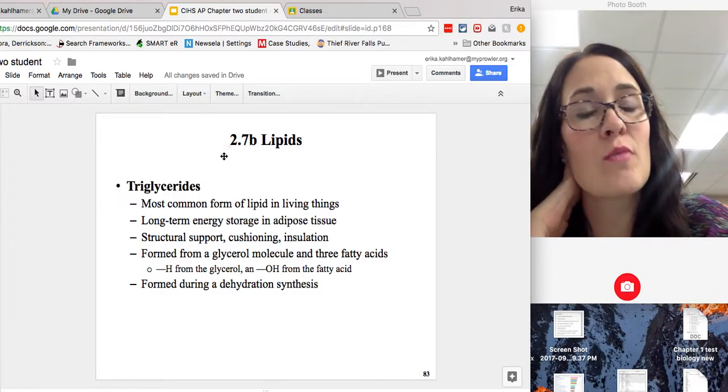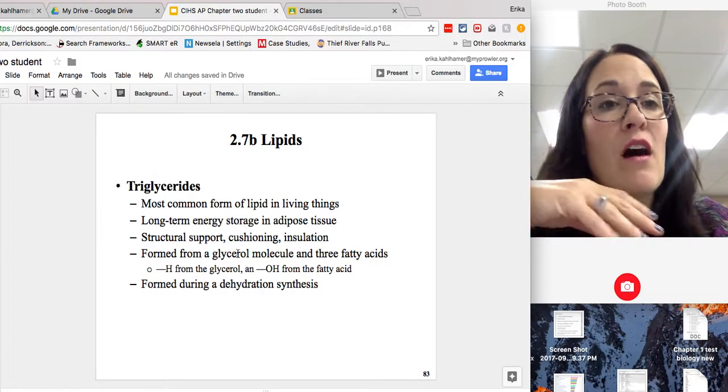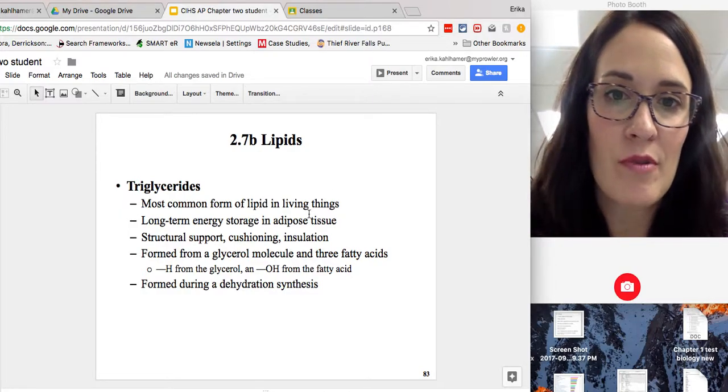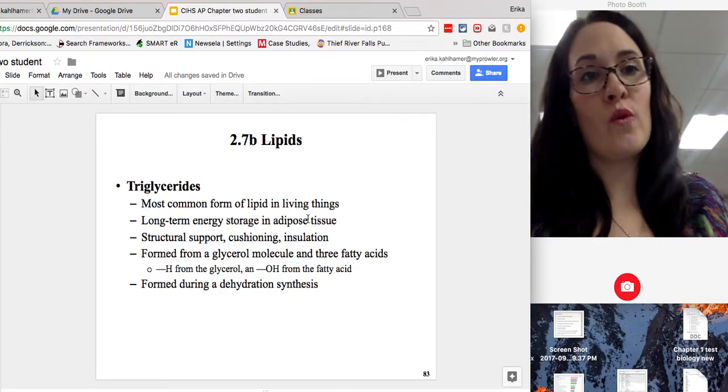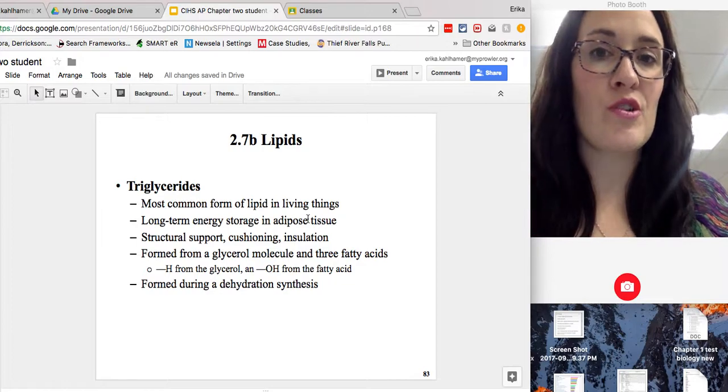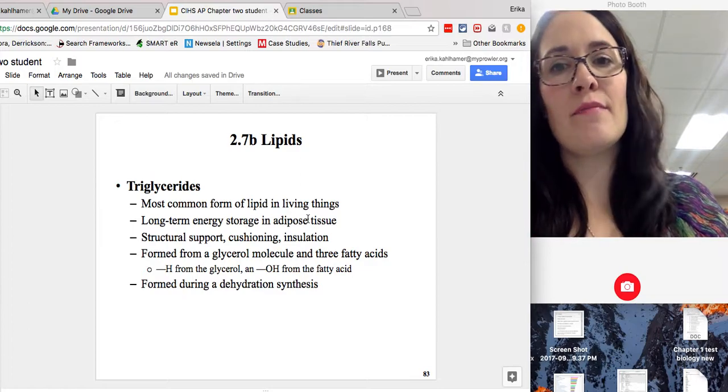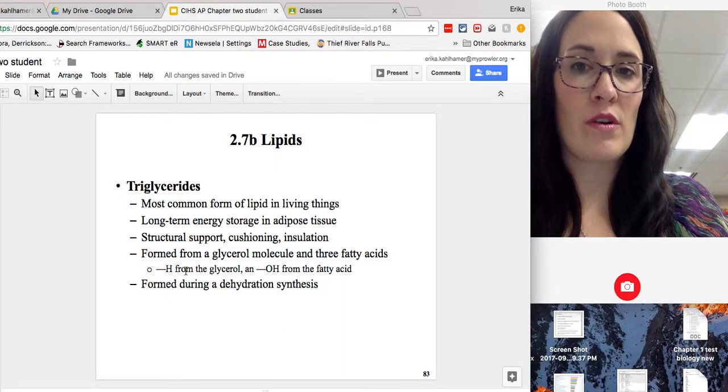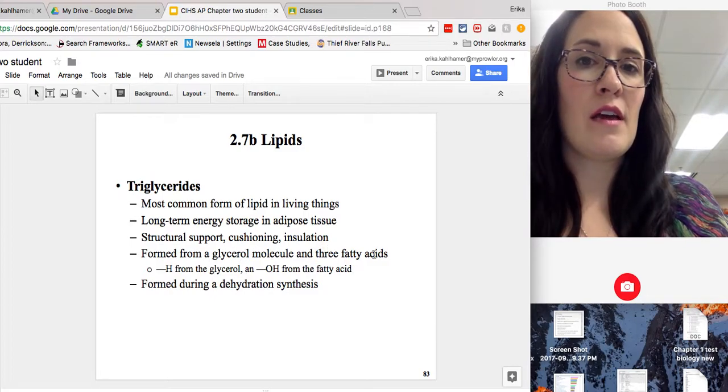So the most common type of lipid that we find in your body is the triglyceride. They provide long-term energy storage that's stored in your adipose tissue. Right next to adipose, just write fat. It supports our structures. We need this fat to cushion us and to insulate us to keep us warm. And how do you make a triglyceride? You need one glycerol and three fatty acids.